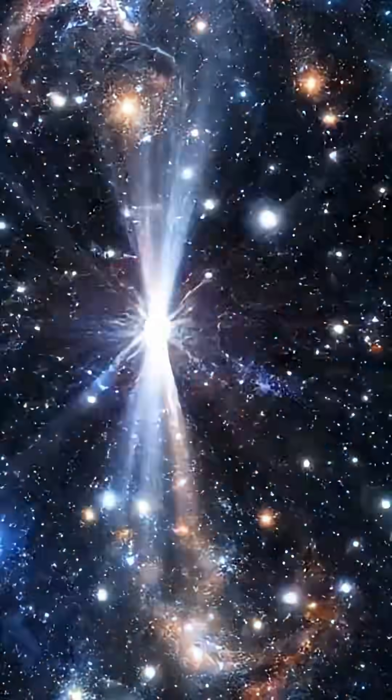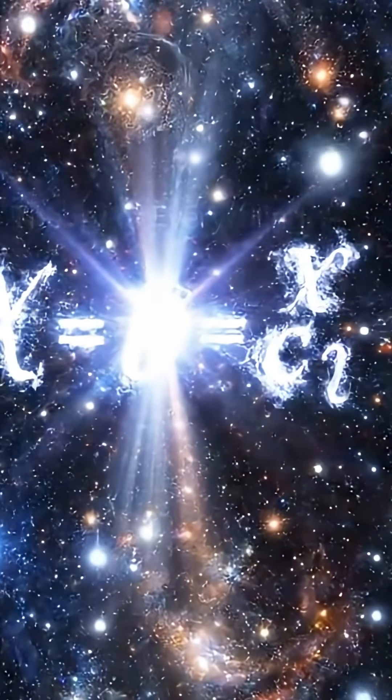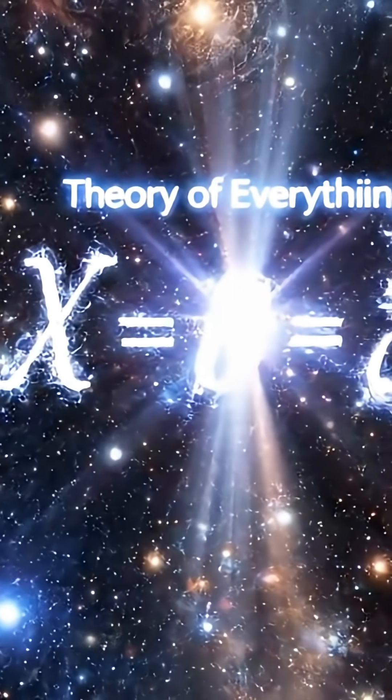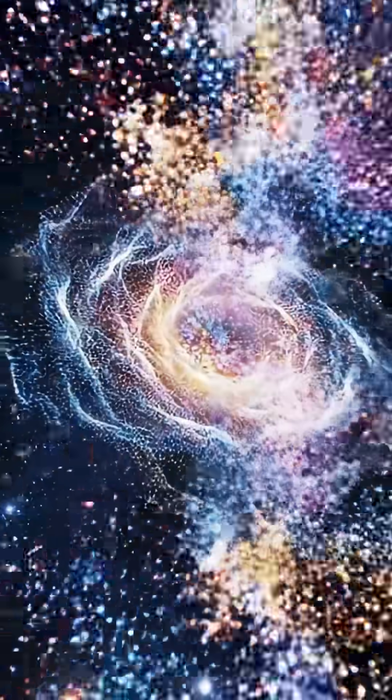If we ever find it, we might finally uncover the theory of everything. But here's the part that'll blow your mind. If gravitons exist, then space and time themselves aren't smooth, they're quantized, pixelated.